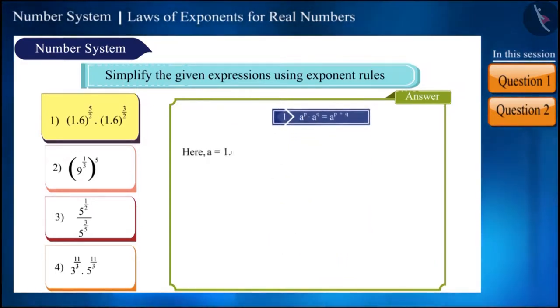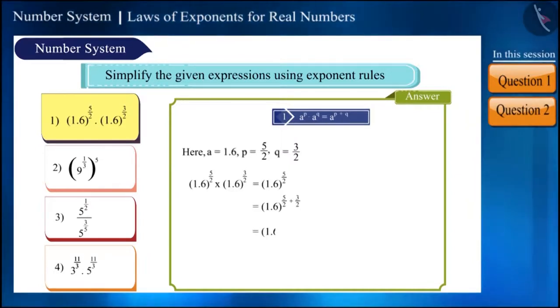Here, A equals 1.6, P equals 5/2, and Q equals 3/2. Now it will be written as 1.6 raised to the power of 5/2 plus 3/2. We got 1.6 raised to the power 8/2. We can also write it as 1.6 raised to the power 4.